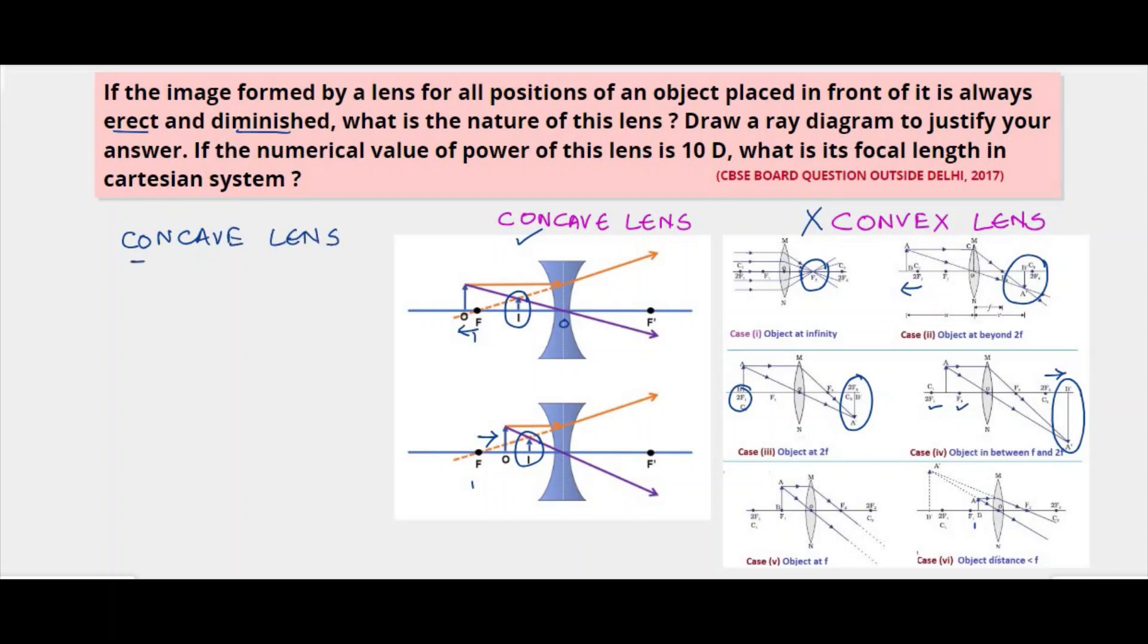Now we have to find out the focal length of this lens where power is given. Power is given as 10 D. We know that power is the reciprocal of focal length expressed in meters. So focal length will be 1 by P, that is 1 by 10, that is 0.1 meter.